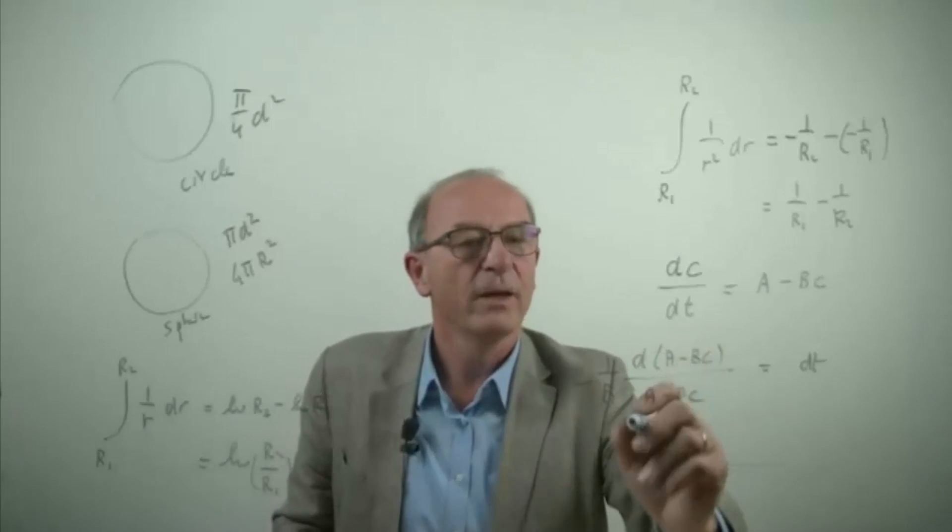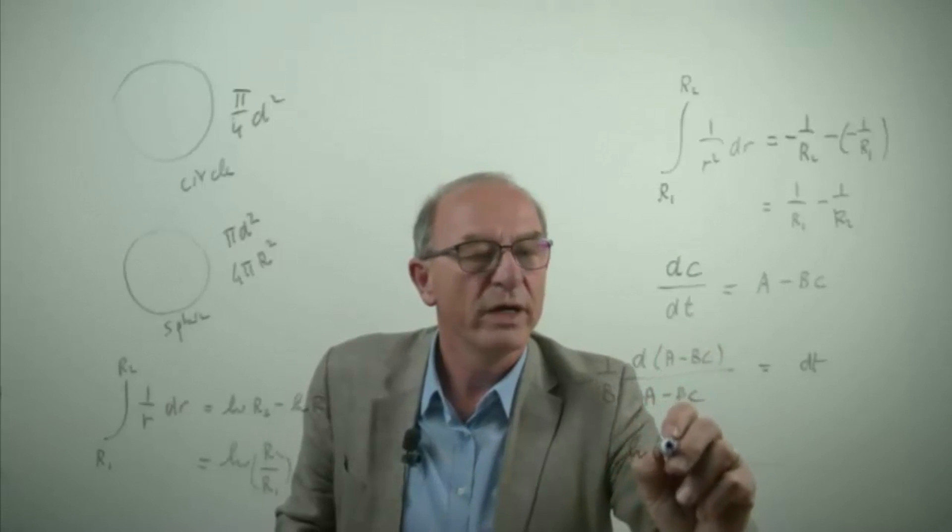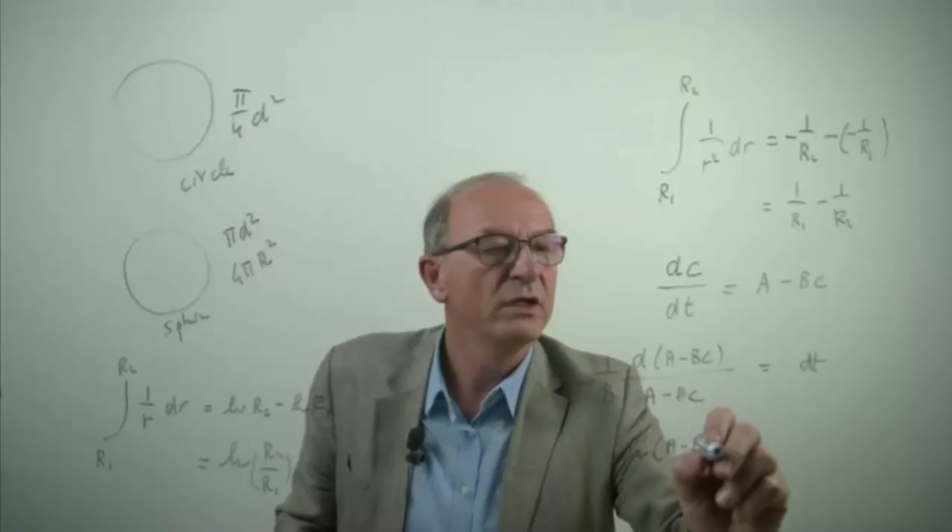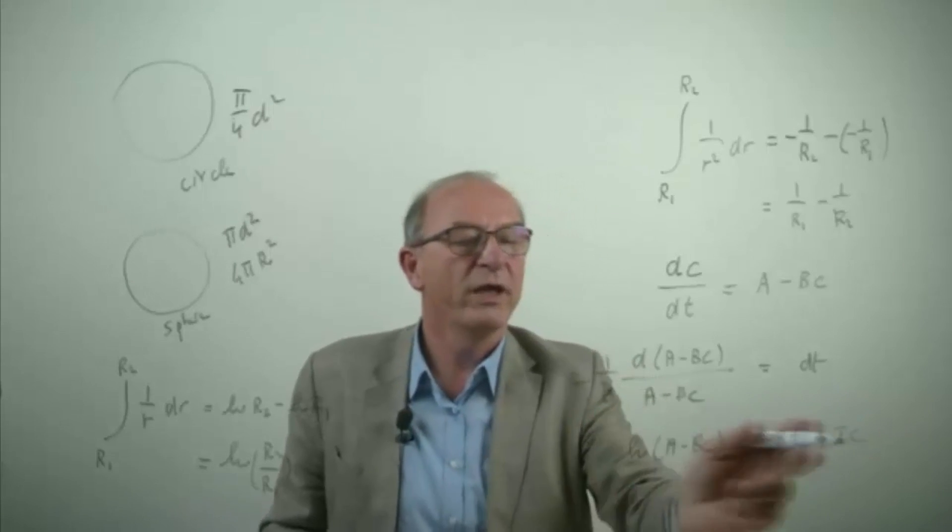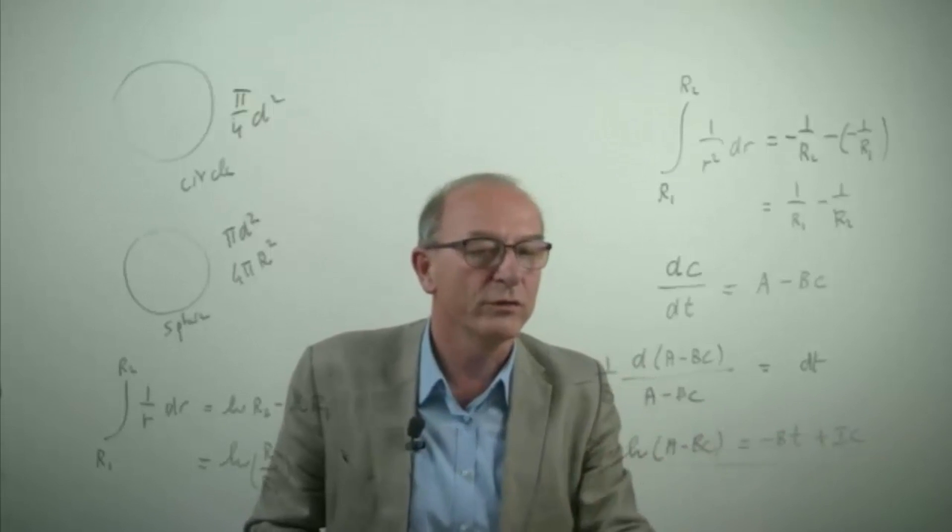So in this case you get the ln of a minus b c minus b t plus an integration constant, and depending on the boundary conditions you can solve this one.